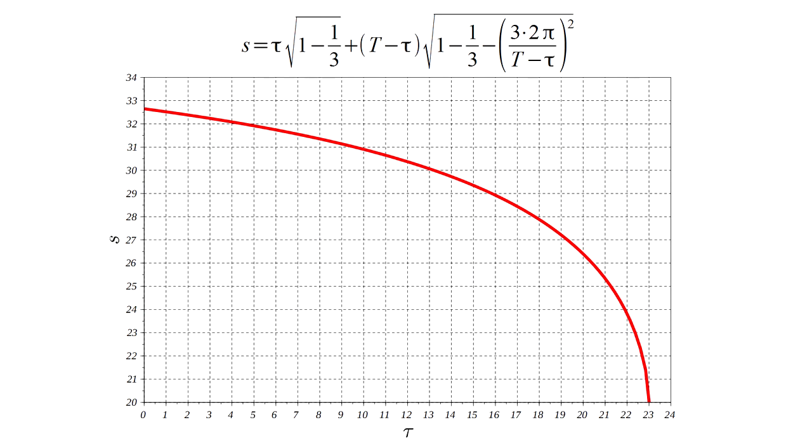An expression for the elapsed clock time can be written down, and plotting this versus tau, we get the curve shown here. The maximum is at tau equals zero, which is the natural orbital motion. Deviation from this results in a shorter elapsed clock time.